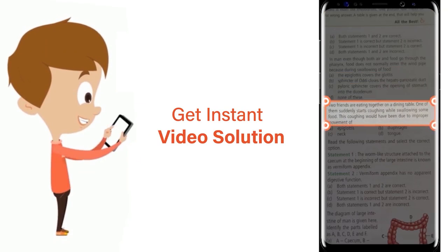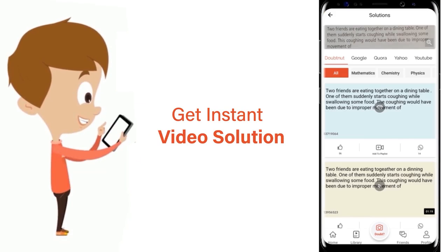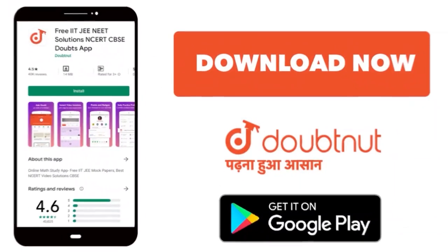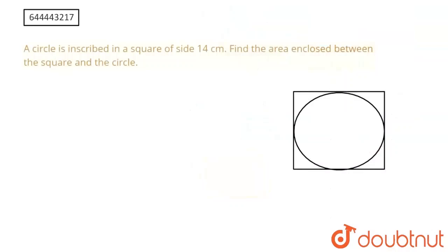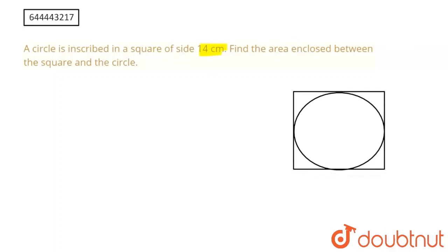The question says a circle is inscribed in a square of side 14 centimeters. We need to find the area enclosed between the square and the circle.